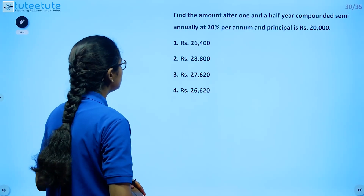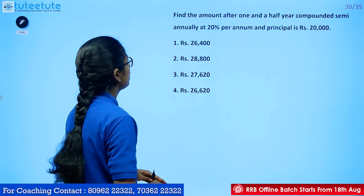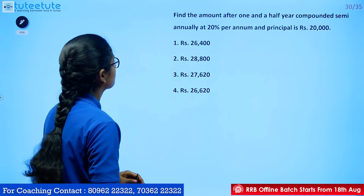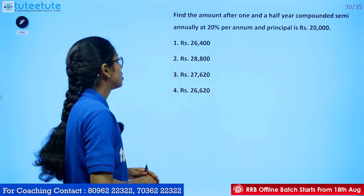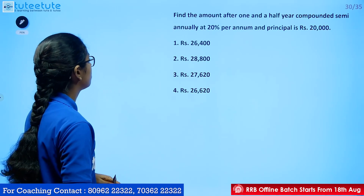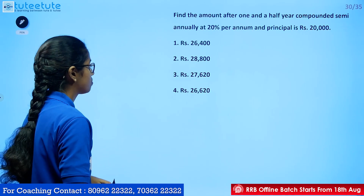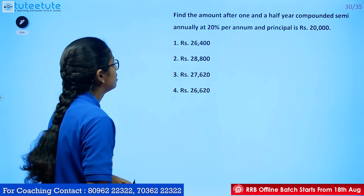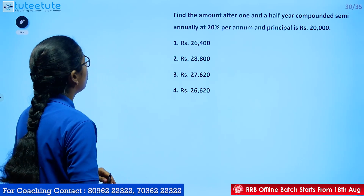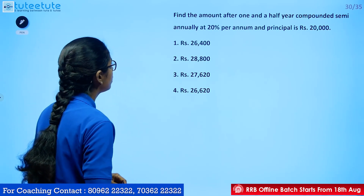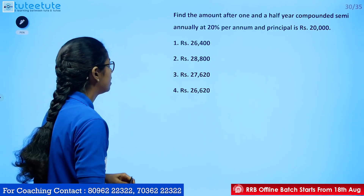Find the amount after one and a half years, compounded semi-annually, at 20% per annum. The principal is 20,000. Four options are given: 26,400; 28,800; 27,620; and 26,620.